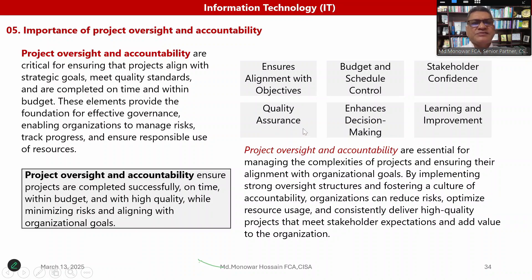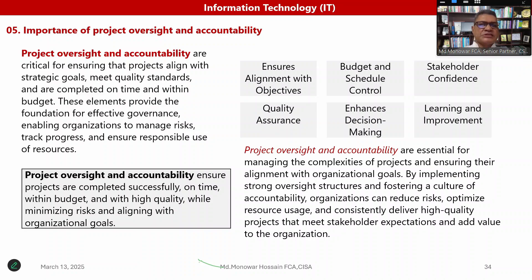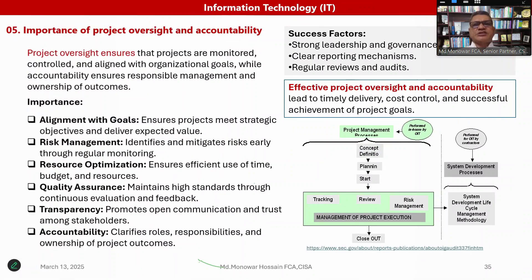Not only complex projects, but all projects — small, large, and sub-projects — require accountability and oversight. Without oversight or accountability, any project cannot be fulfilled or completed. By implementing strong oversight and fostering a culture of accountability, organizations can reduce risk, optimize resource use, and consistently deliver high-quality projects that meet stakeholder expectations and add value to the organization. The importance of oversight includes alignment with goals — each organization has a specific mission, vision, and goal, and based on these they set objectives and implement IT systems and other systems. Oversight ensures the project meets strategic objectives and delivers expected value.